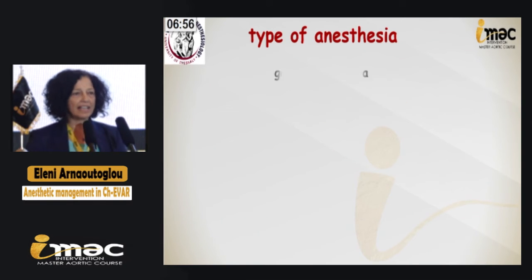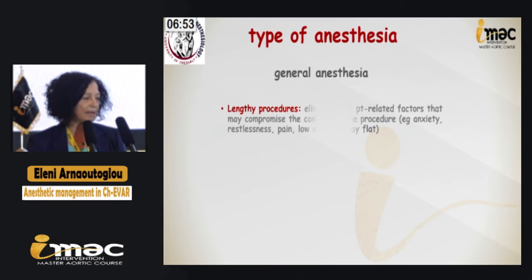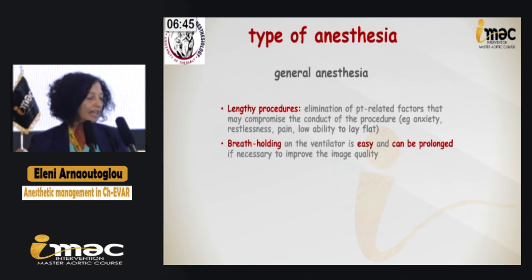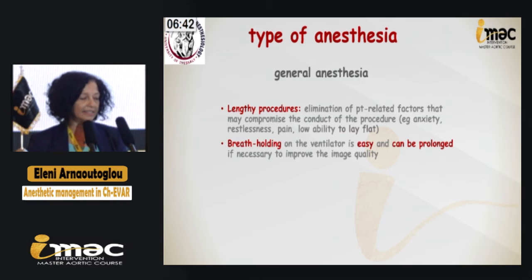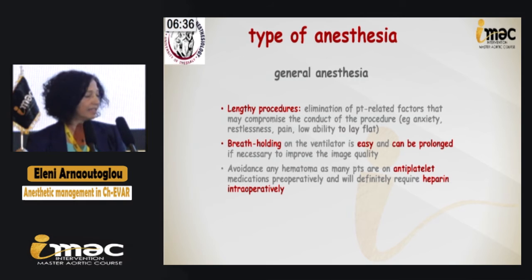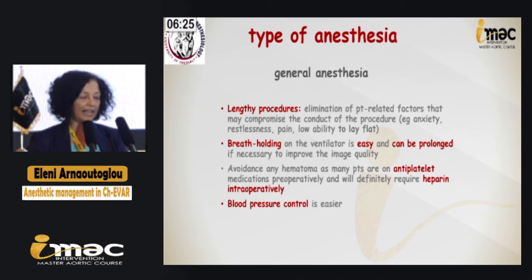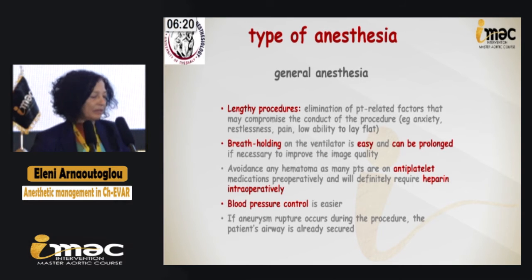Regarding type of anesthesia, general anesthesia is of course the choice for these patients, as we are talking about lengthy procedures where both upper extremities are employed in the majority of patients. Breath-holding on the ventilator is easy and can be prolonged if necessary to improve image quality. With general anesthesia, we also avoid hematomas, as many patients are on antiplatelet medications preoperatively and will definitely require heparin intraoperatively. Blood pressure control is easier, and if a rupture occurs during the procedure, the patient's airway is already secured.